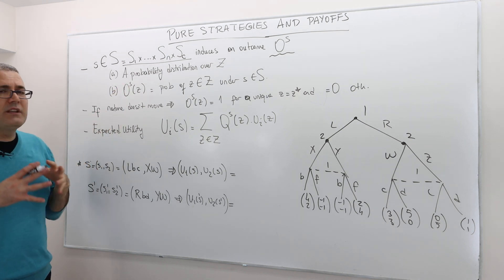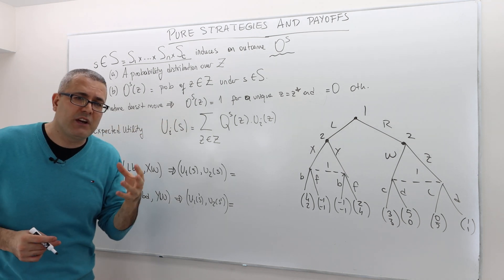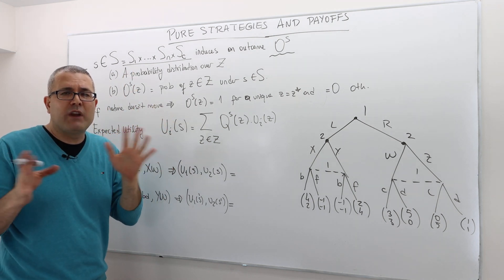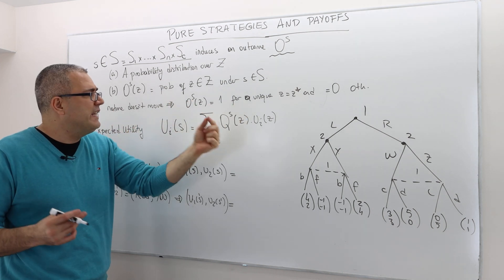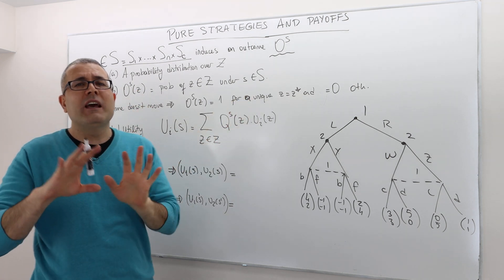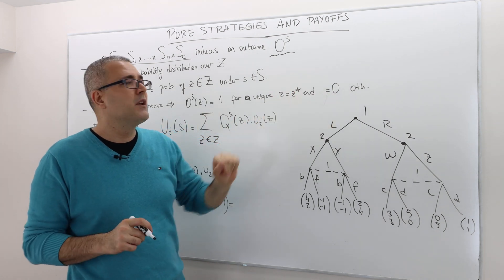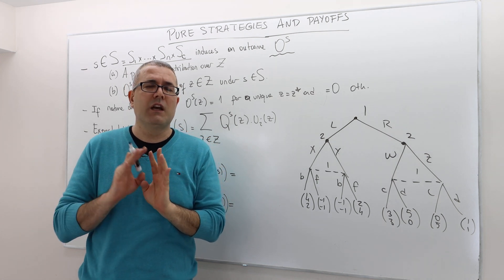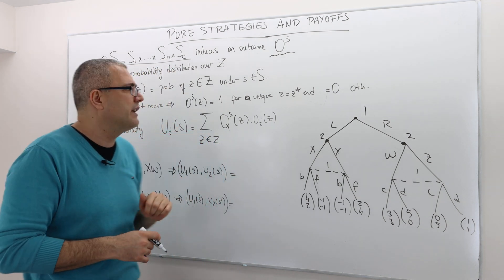If nature does not move, and everybody is playing a pure strategy — meaning they choose just one action and don't randomize — then O^S(z) must be one for some unique terminal history, and for all other histories O^S(z) must be equal to zero. This means expected utility calculations are pretty straightforward when all players play pure strategies and nature is not included.